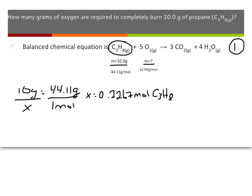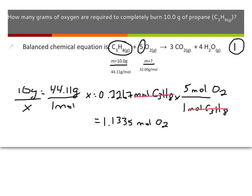The next step is to use my mole ratio to figure out my moles of oxygen. I'm always going to divide by where I'm at and multiply by where I'm going. I have 1 mole of C₃H₈ for every 5 moles of O₂, based on my mole ratio. My moles of C₃H₈ cancel out, so I'm taking the answer in my calculator, dividing by 1 and multiplying by 5, giving me 1.1335 moles of O₂.